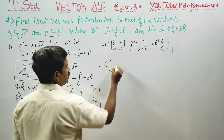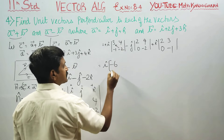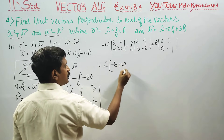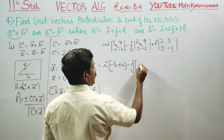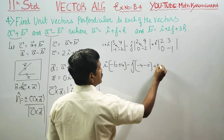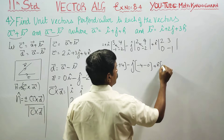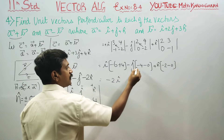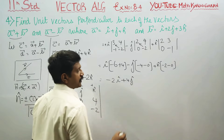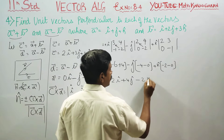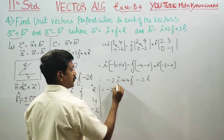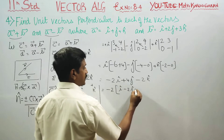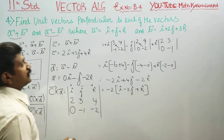Expanding the determinant: for the i component, right-hand side is minus 6 minus left-hand side minus 4, giving minus 2i. For the j component, minus of (minus 4 minus 0) gives plus 4j. For the k component, minus 2 minus 0 gives minus 2k. Therefore, c cross d equals minus 2i plus 4j minus 2k. Factoring out minus 2, we get c cross d equals minus 2 times (i minus 2j plus k).